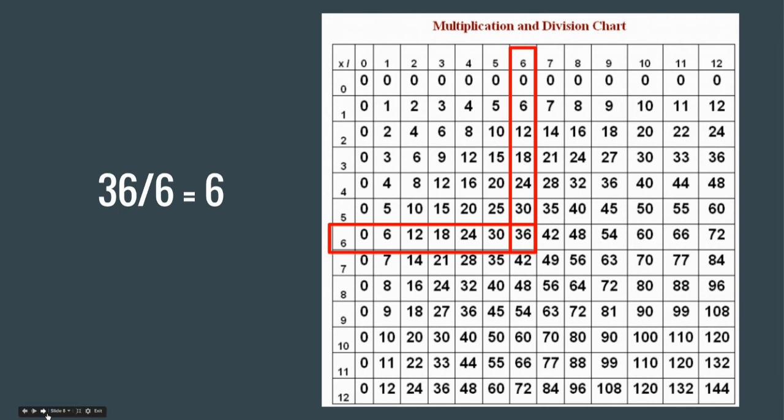Now if you see, there are other 36's on our chart. So you want to make sure that when you're looking for 36, let's go back here. When you're looking for 36, you also want to look, we're dividing it by 6, you want to find that 6 in that first column. And that way you know you're on the right track.